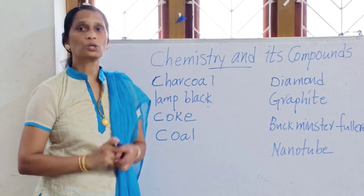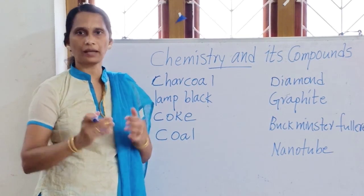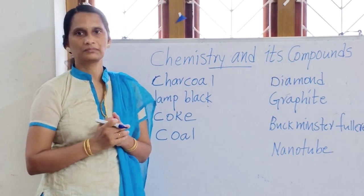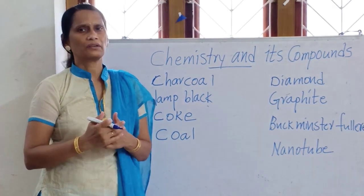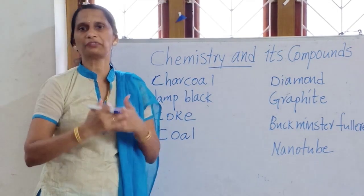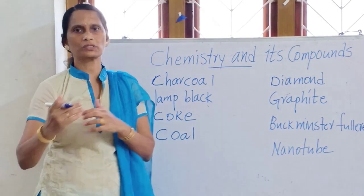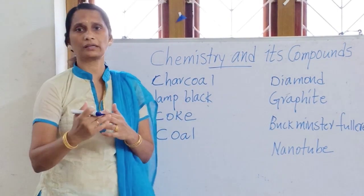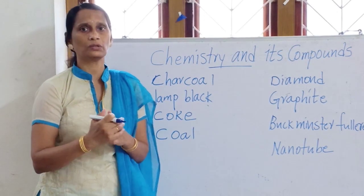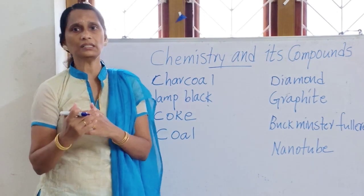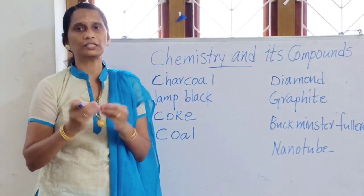So, only this element carbon can exist in many different forms. There are some other elements like sulfur and phosphorus that also can exist in different forms, but only very limited forms.